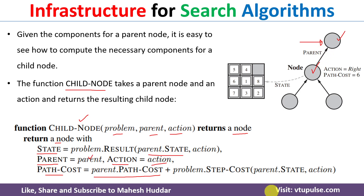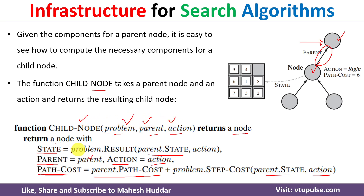To calculate the step cost: we applied an action to the parent, which generates the child node. This step cost is added to the parent's path cost so that we can calculate the child's path cost. So whenever we call child_node with problem, parent, and action, we are able to generate the child node.